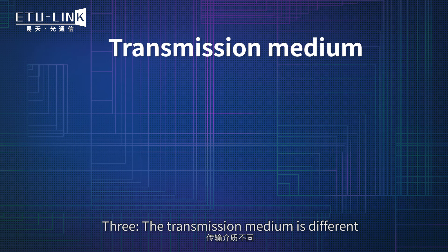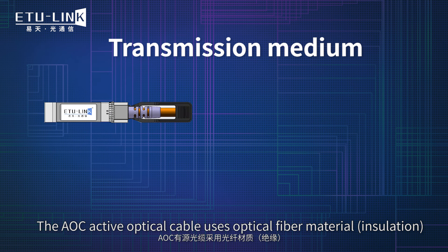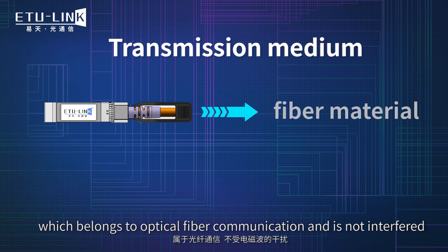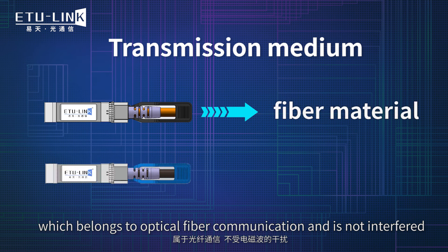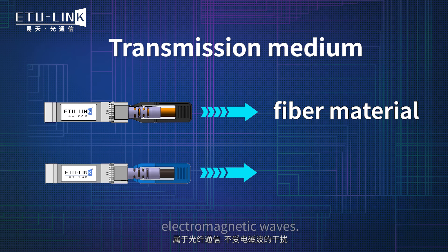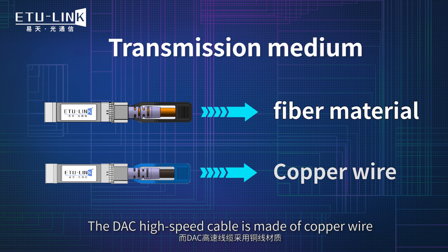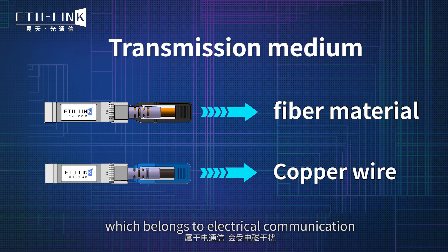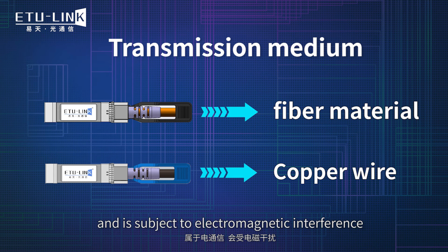Three: the transmission medium is different. The AOC active optical cable uses optical fiber material, which belongs to optical fiber communication and is not interfered by electromagnetic waves. The DAC high-speed cable is made of copper wire, which belongs to electrical communication and is subject to electromagnetic interference.